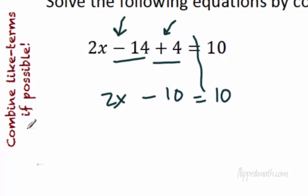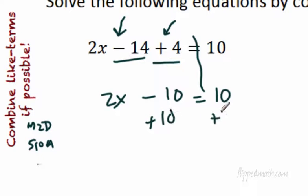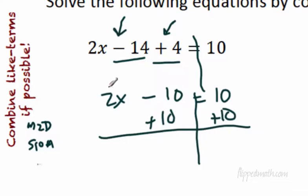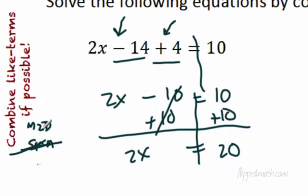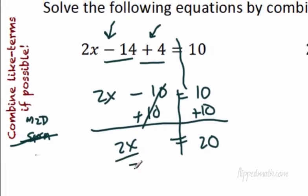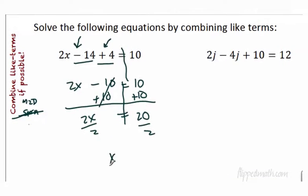The first thing that happens is multiply by 2, then subtract 10. The opposite of subtracting 10 is adding 10, then divide by 2. So we add 10 to each side. Drawing the line: 2x comes down, the negative 10 and positive 10 cancel, and the equal sign gives us 20. Now divide each side by 2 and we get x equals 10. Done with that one.